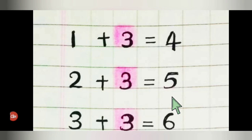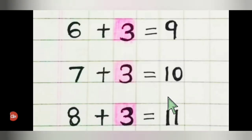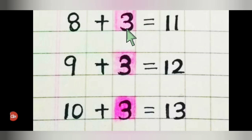Addition table of three. Step one — children, repeat after me. One plus three is four. Two plus three is five. Three plus three is six. Four plus three is seven. Five plus three is eight. Six plus three is nine. Seven plus three is ten. Eight plus three is eleven. Nine plus three is twelve. Ten plus three is thirteen.